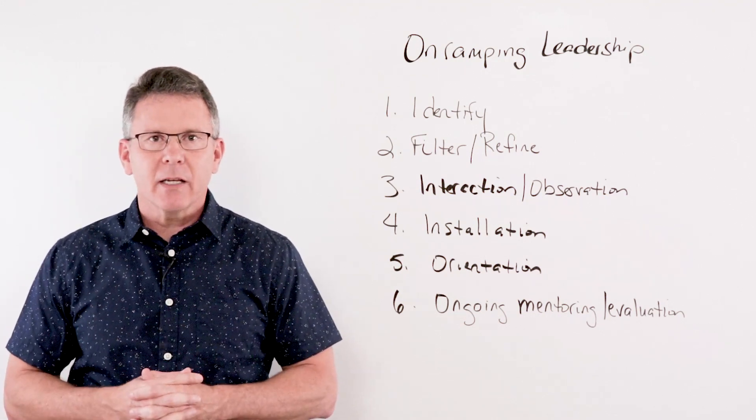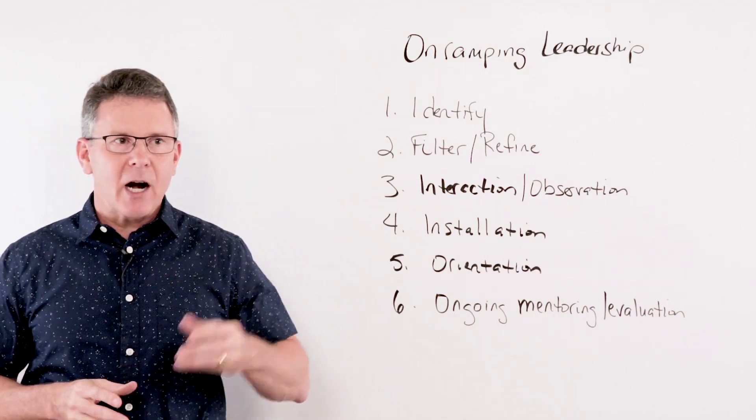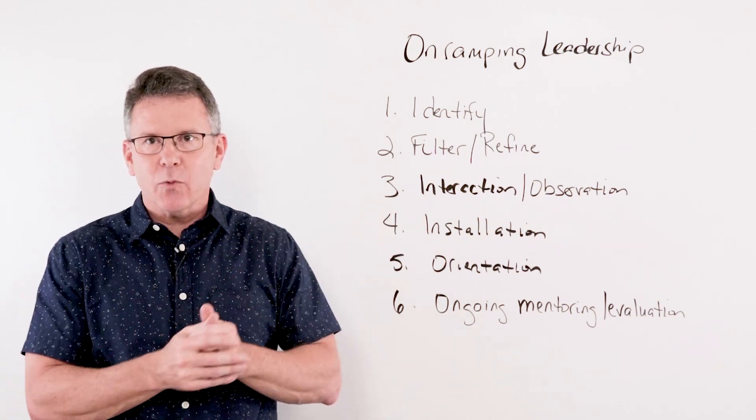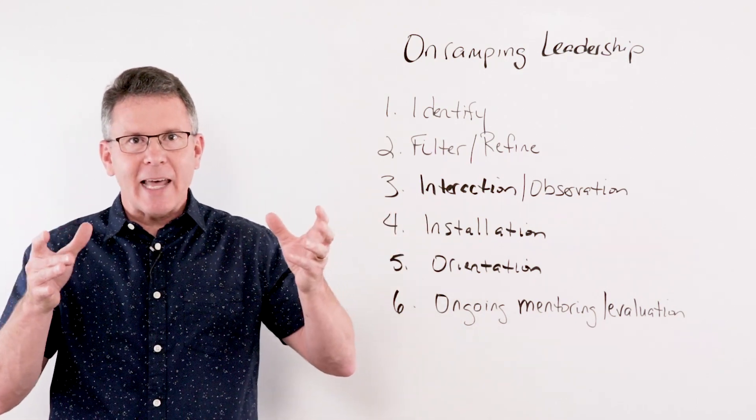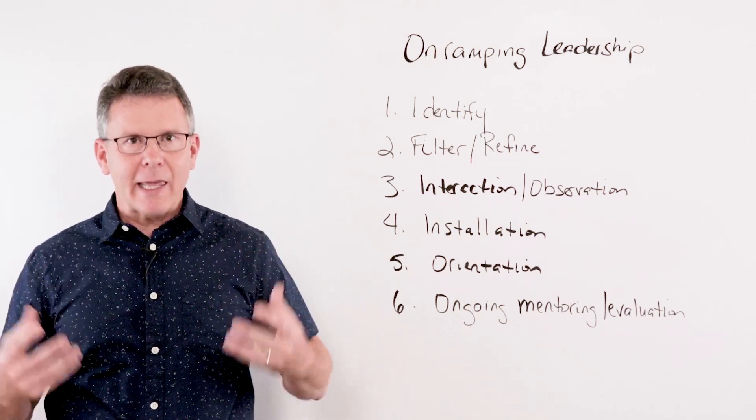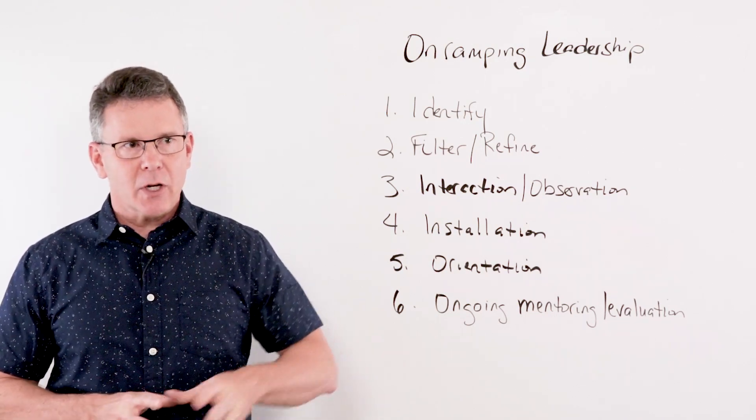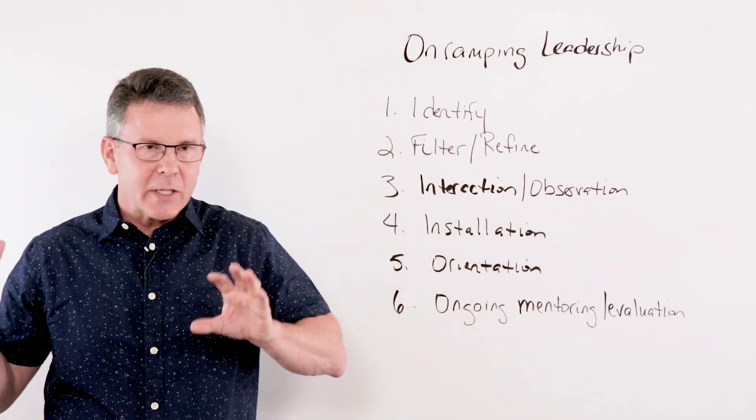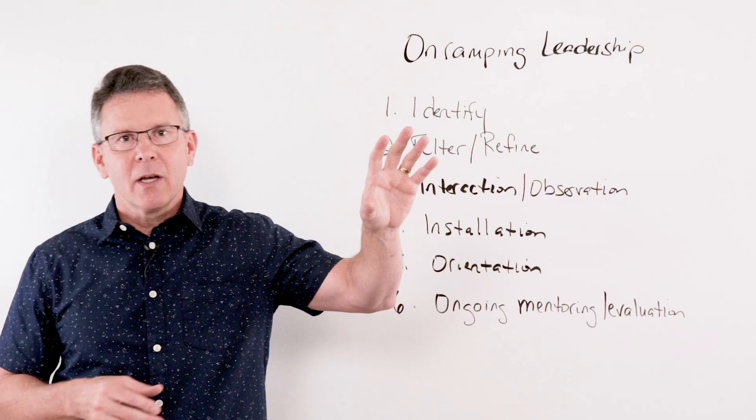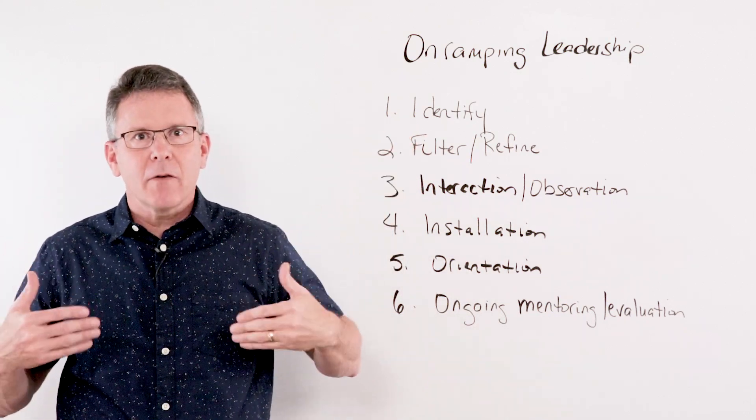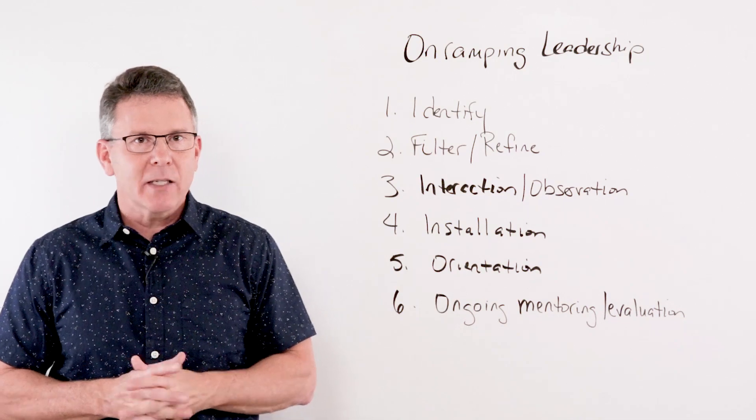At our church, one of the things that we did was we understood that we had our mission, vision, and values, our doctrinal distinctives, our purpose and things like that. But we also had a culture of what it meant to be all in in our church. So we took our doctrine, we took our mission, vision, values, we took the expectations of involvement, of membership and things like that. We added into it other things that were just part of the leadership culture of our church, and we began to create a filter.